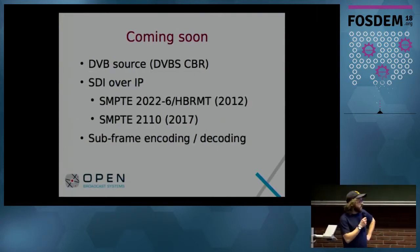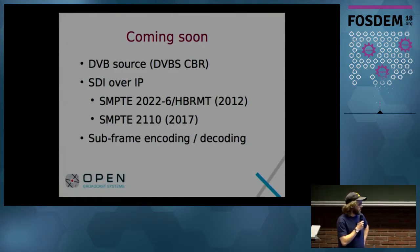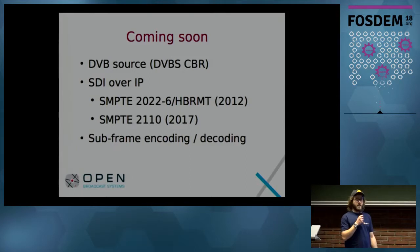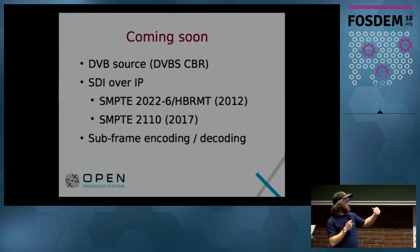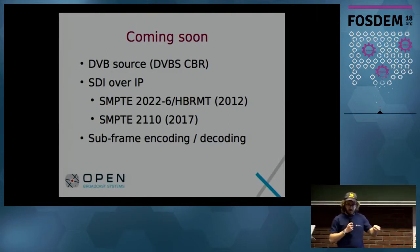What's coming? DVB satellite source. SDI over IP is working on air now but not yet committed — the 2022 old standard is working and we're working on the new one just released last year, which should be ready for NAB. We'll also work on subframe latency encoders and decoders, so we can actually transmit or decode a video before the rest of the frame has arrived. For example, with a progressive scan camera you can start encoding and transmitting the first lines before the scan is done.